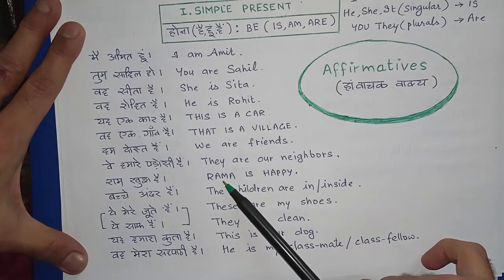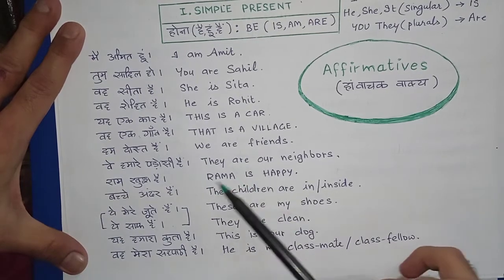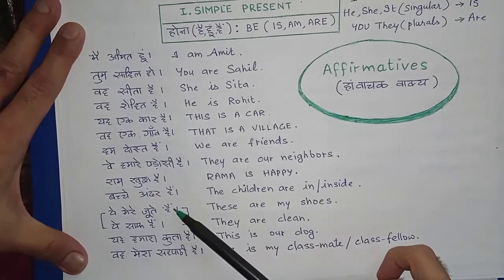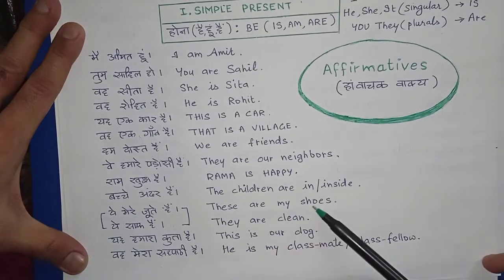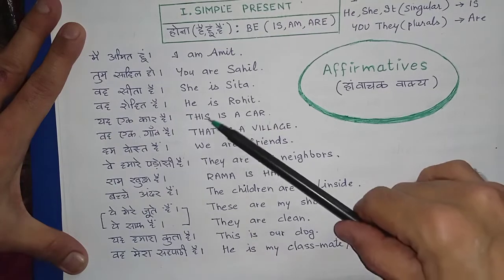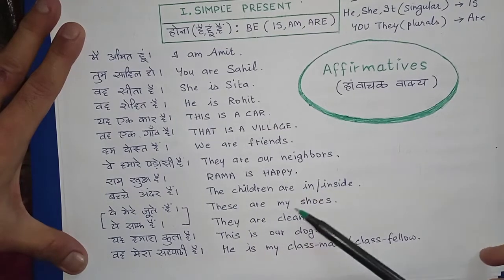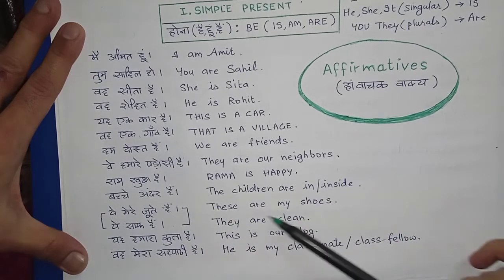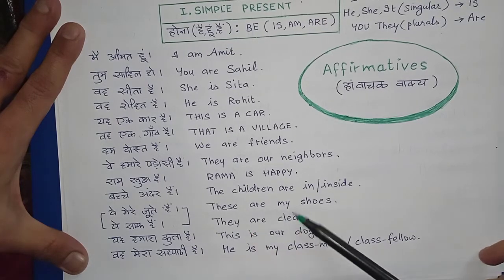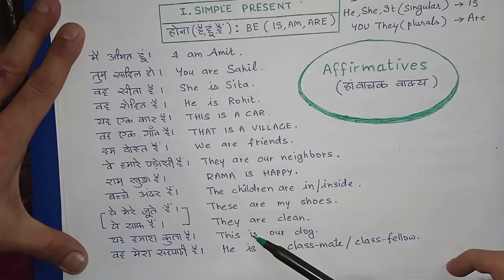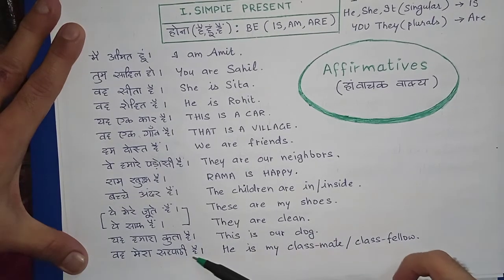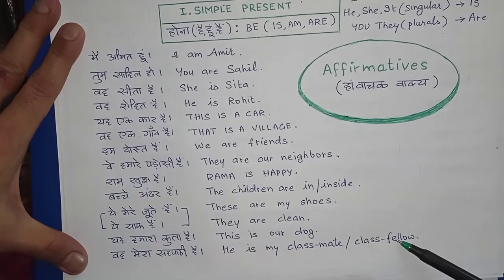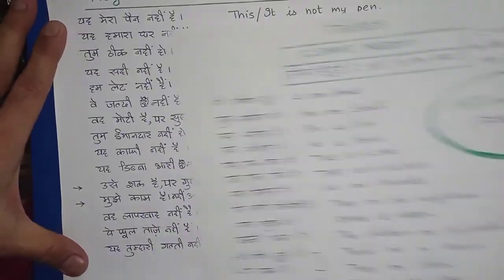Woh hamare padosi hain — They are our neighbors. Ram khush hai — Rama is happy ('a' lagate hain kyunki Ram ek animal bhi hota hai). Bachche andar hain — The children are inside. Yeh mere joote hain — These are my shoes. Yeh saaf hain — They are clean. Yeh hamaara kutta hai — This is our dog. Woh mera classmate hai — He is my classmate.